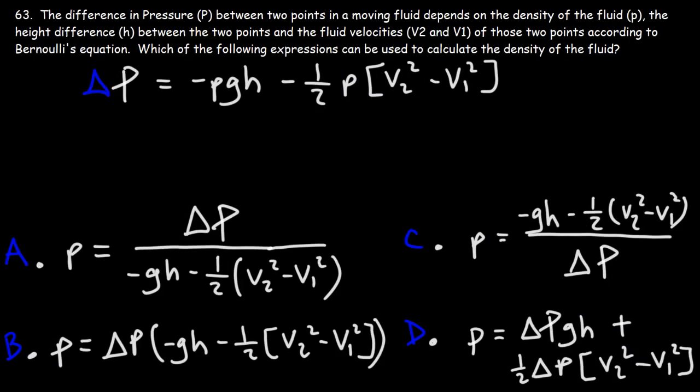The difference in pressure between two points in a moving fluid depends on the density of the fluid, the height difference between the two points, and the fluid velocities V2 and V1 at those two points according to Bernoulli's equation. Which of the following expressions can be used to calculate the density of the fluid?